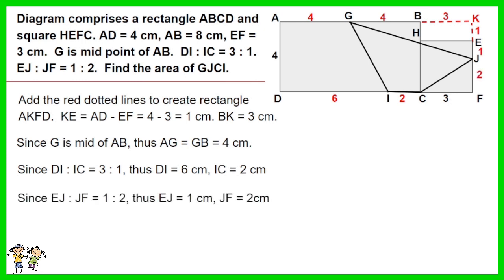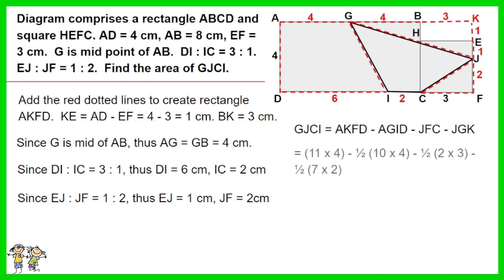Since EJ to JF ratio is 1 to 2, thus EJ equals 1 cm, JF equals 2 cm. The area of GJCI is equals to AKFD minus AGID minus JFC minus JGK. Work out the equation. The answer is 14 cm squared.